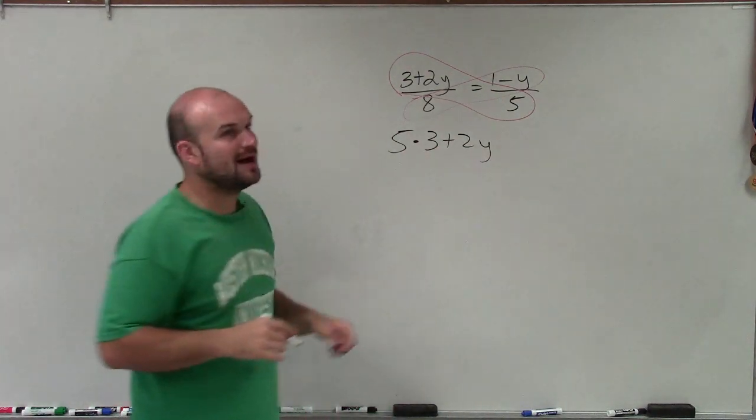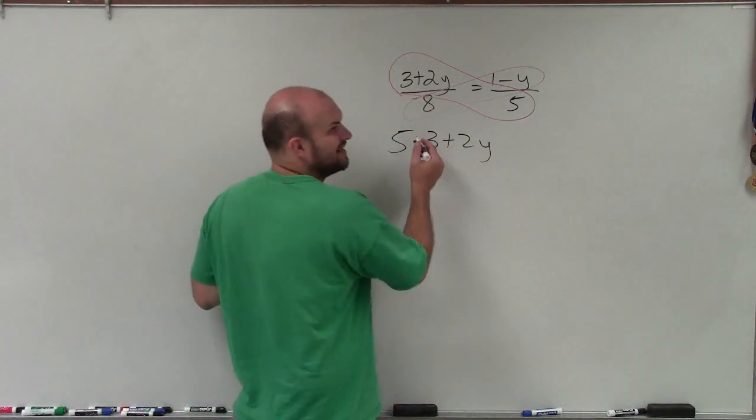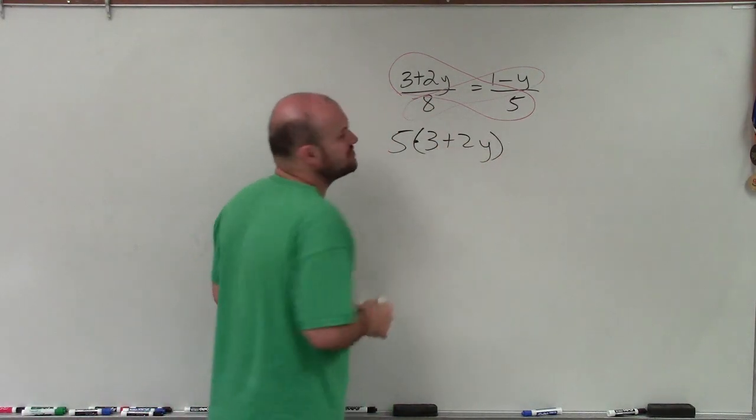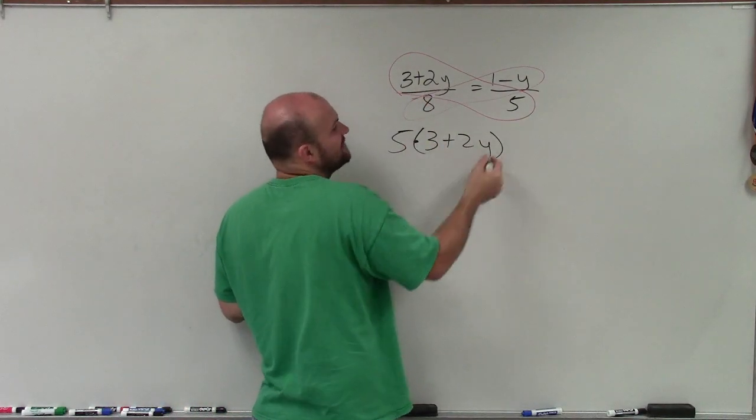5 times 3 plus 2y does not mean 5 times 3 plus 2y. That kind of sounds weird. You have to use your parentheses, right? It's 5 times 3 and it's 5 times 2y.